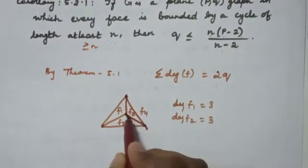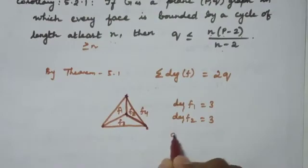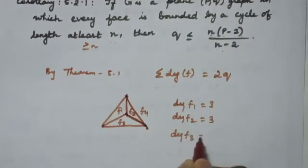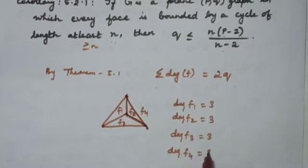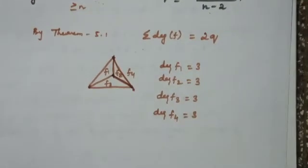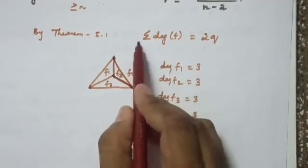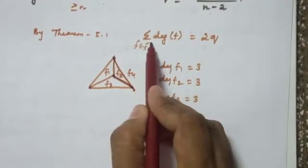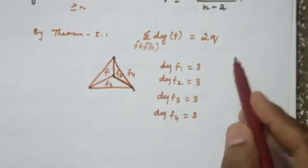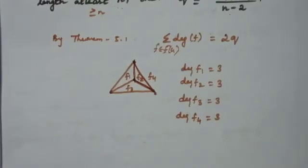In this triangle, this is a cycle, so the length of the cycle is 3 — that is the boundary. The degree of face 3 is also 3, and the degree of face 4 is also 3. So we will now add up all the degrees.